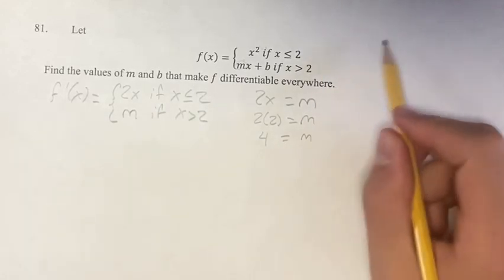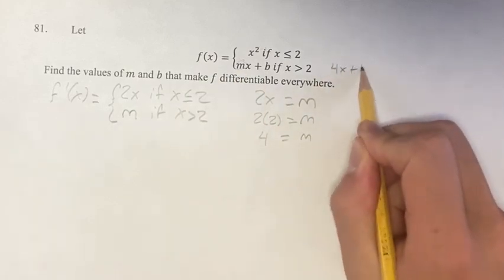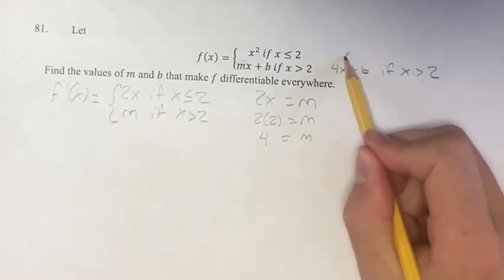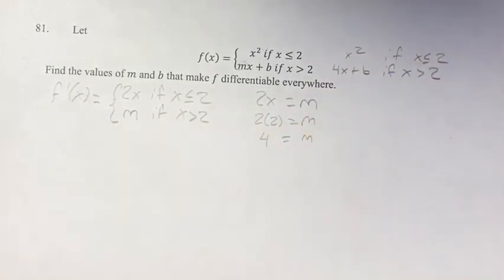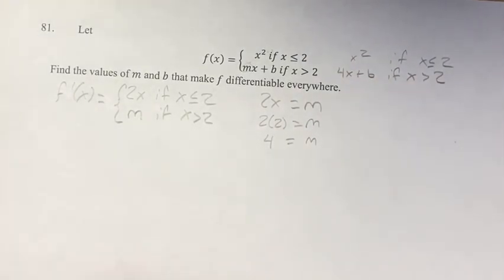So now we know that the function is equal to 4x plus b if x is greater than 2, and still x squared if x is less than or equal to 2. Now we're saying okay, this works, the derivative is going to be continuous across the function, but we don't actually know if the function is continuous.